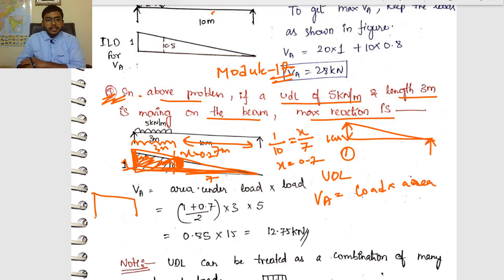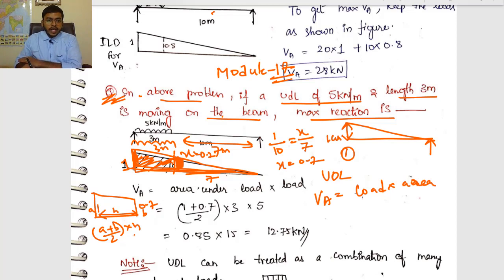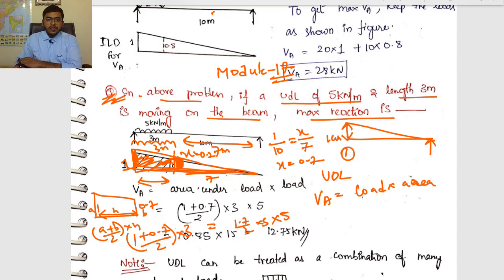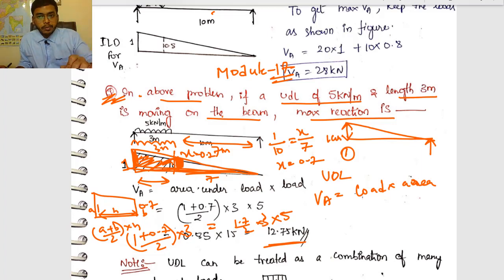The shape is a trapezoid with coordinates 0.7 and 1, over a length of 3 meters. Area = (a + b)/2 × h = (1 + 0.7)/2 × 3. Multiplying by the load of 5 kN/m: 1.7/2 × 3 × 5 = 12.75 kN. So the maximum reaction due to this UDL is 12.75 kN.